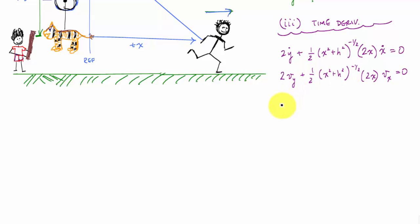And now I can solve for vy. I can rearrange this all for vy, and I would get vy is negative x over 2 times the square root of x squared plus h squared times vx. I have a relationship between the velocity of the pinata and velocity of the dad.